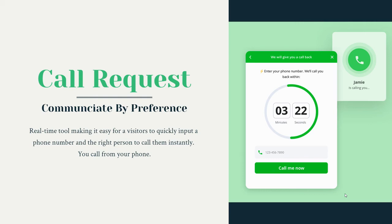You can add in a little more information — maybe a first name or qualifying questions like why they're looking for the call — so if multiple people can take it, they can decide who's the best person to do so. This also works through our mobile app: when the request comes through and you click accept, it will pull up that phone number automatically so you can dial. It's a really powerful tool that allows someone to get an instant call request right from your website.